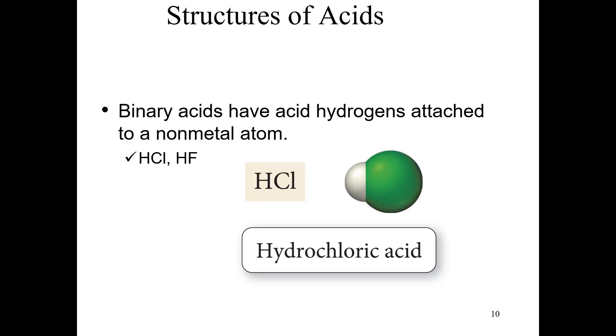In the previous section we reviewed some of the properties of acids and bases that we can observe in a standard lab environment. Let's look further into the structures of acids and bases and look at some definitions so we can get a better grip of what acids and bases actually are. In the matter of acids, we have some that are called binary, in which we have what we call an acid hydrogen — a hydrogen that is going to be ionized — attached to a nonmetal atom. For example, HCl is called hydrochloric acid.